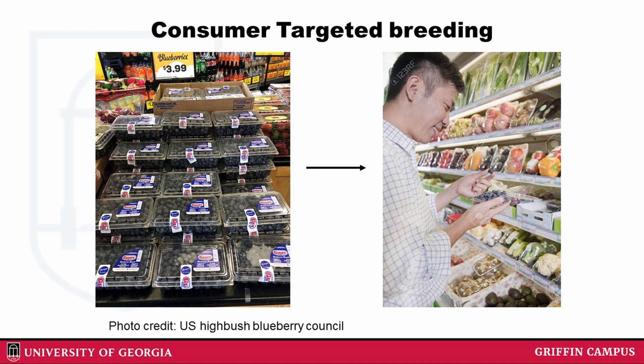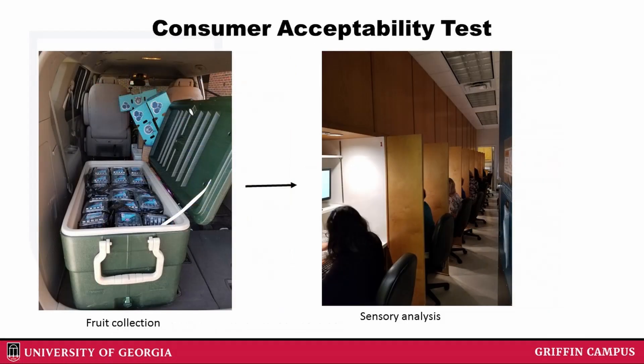In fruit crops, consumers are more interested in fruit quality. Flavor is one of the important fruit quality traits that consumers look out for. Flavor in fruits is known to be synthesized by various volatile compounds. So if there is a cultivar that consumers prefer with regards to its flavor, we can run an experiment to determine the volatile compounds responsible for that flavor. A breeder can then use these results to find the biochemical pathway of the volatile compound and use it to improve other berries.